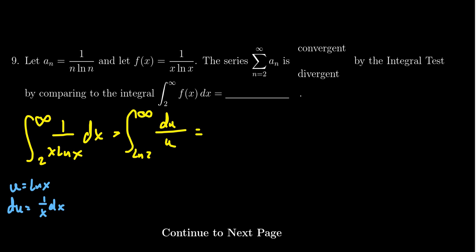Then continuing on, you're going to take the antiderivative of 1 over u, which is the natural log of the absolute value of u. And you're going to evaluate this as you go from the natural log of 2 to infinity.